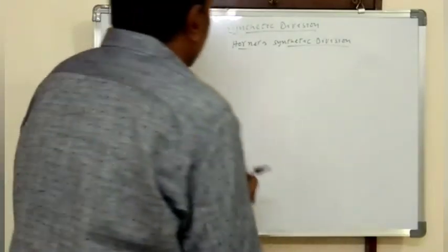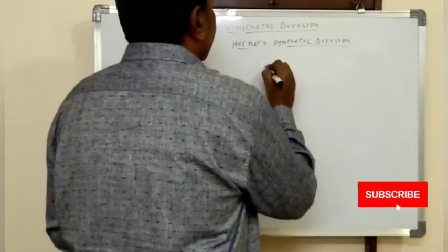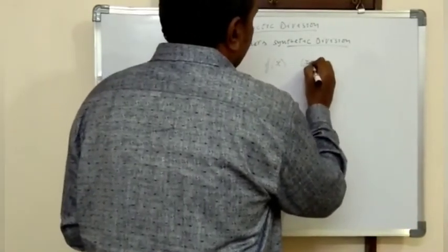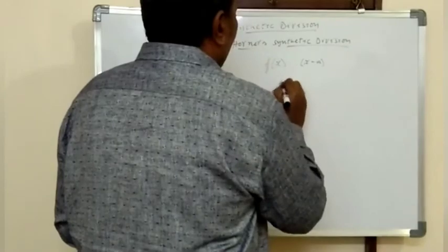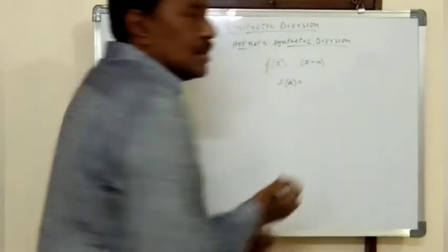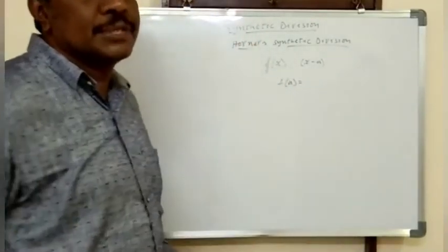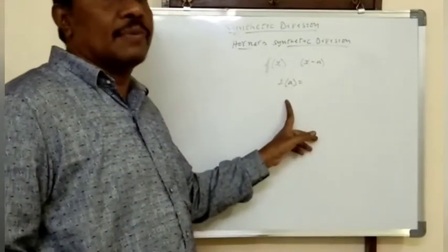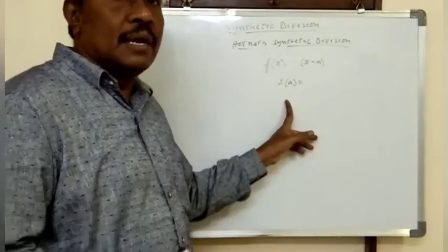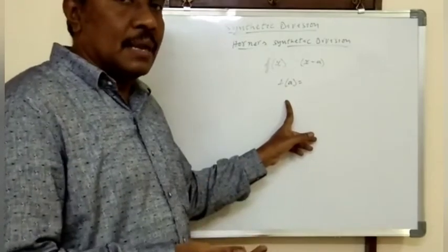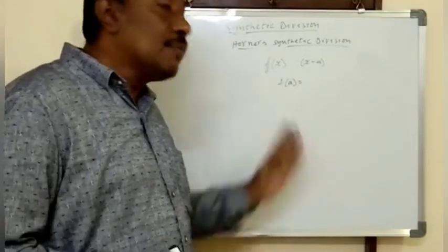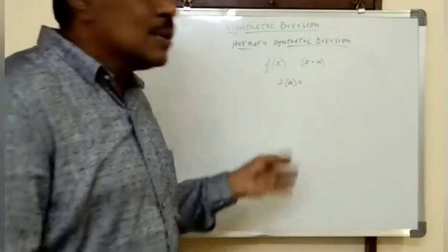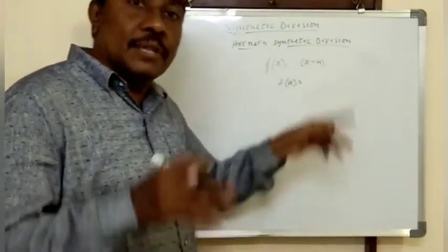For example, if you take a polynomial f(x) divided by x minus a, you already know that the remainder is f(a) — that is the remainder theorem and factor theorem. But what about the quotient? We can't find the quotient using those theorems. So by using synthetic division, we can find the quotient.